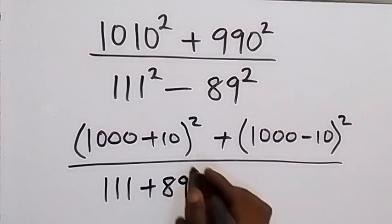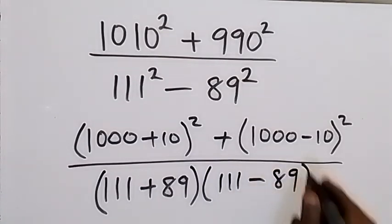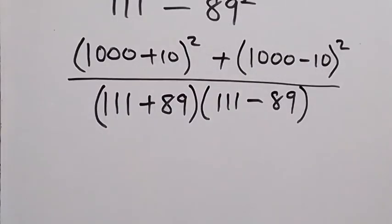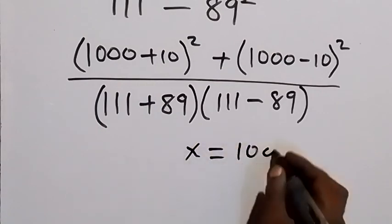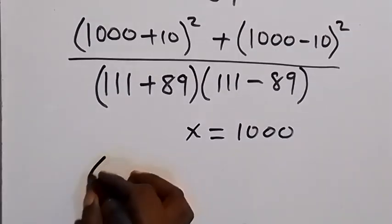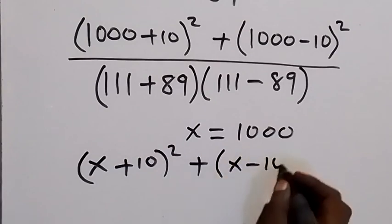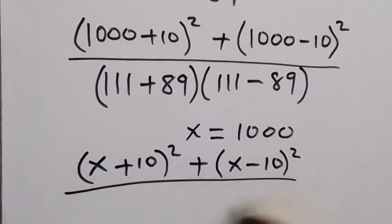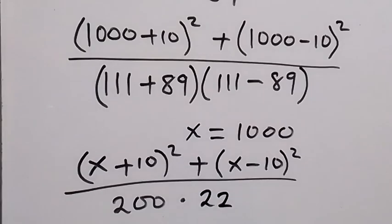In the next step, let x equal 1000. Then we can write x plus 10 squared plus x minus 10 squared in the numerator. The denominator simplifies: 111 plus 89 gives 200, and 111 minus 89 gives 22, so the denominator is 200 times 22.